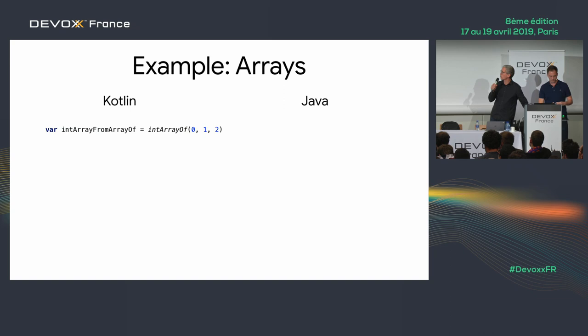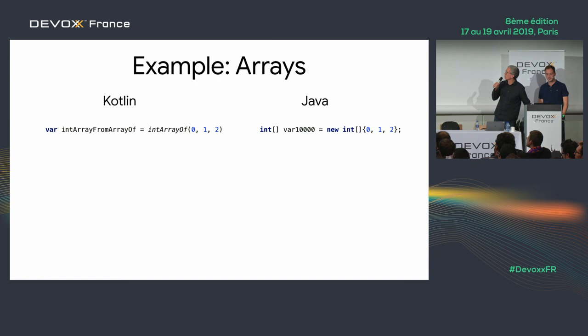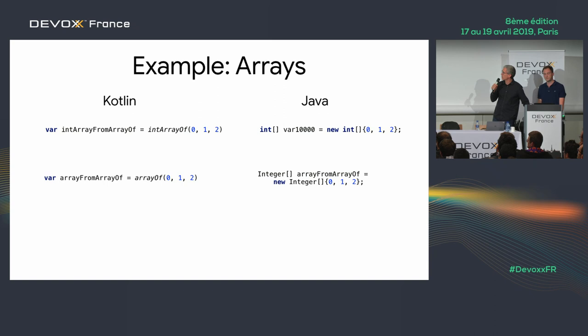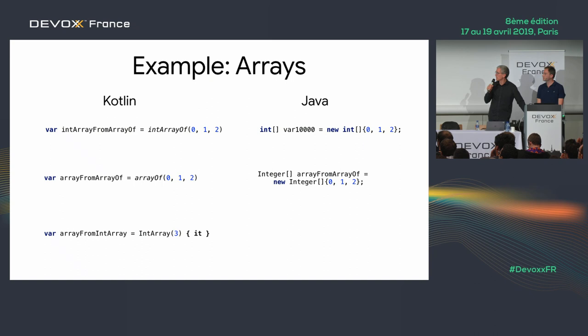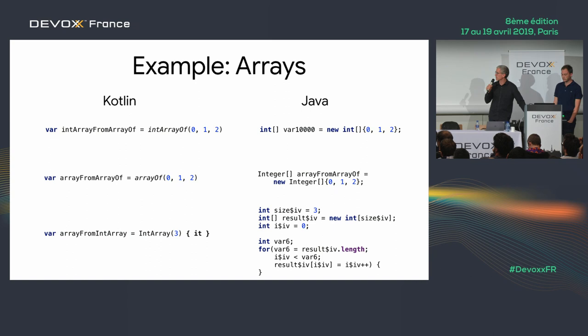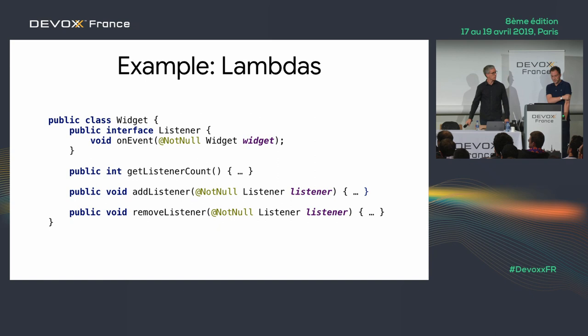Arrays: it matters how you declare them. IntArrayOf gives you an array of primitive ints, as you'd hope. ArrayOf, even when passing integers, produces an array of boxed Integers because the compiler can't infer enough to choose primitives. IntArrayOf(3) with a lambda predicate also gives you the primitive array and calls the lambda for each element.